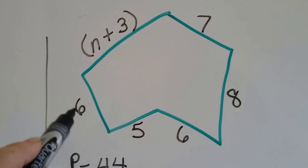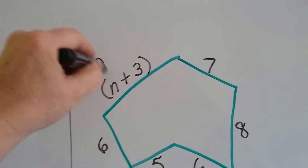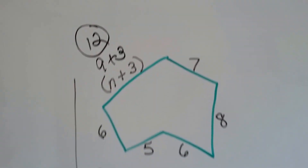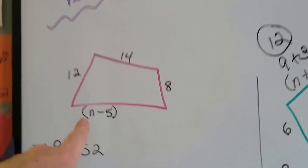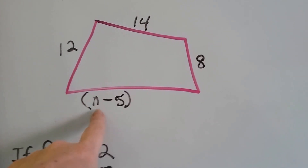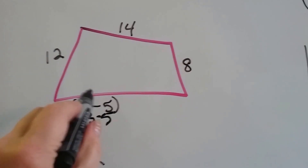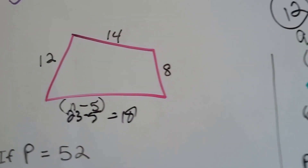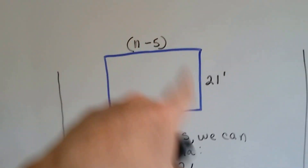We need to plug these in. If n is equal to 9, we're still not finished — this is 9 plus 3, which means the side is equal to 12. And even on the first one, if n is 23, it's 23 minus 5, so that side is equal to 18. We still need to finish it and figure out what the actual side length is.